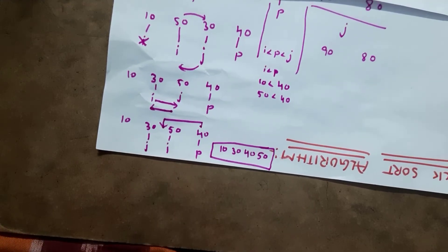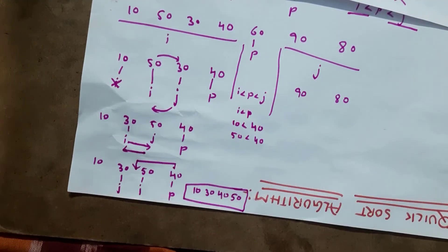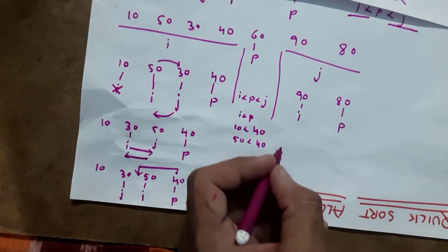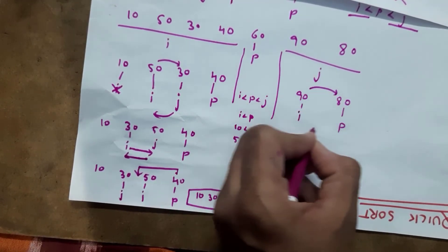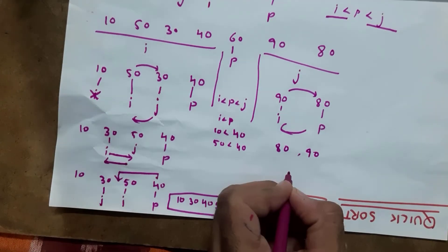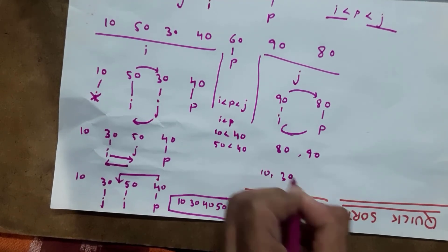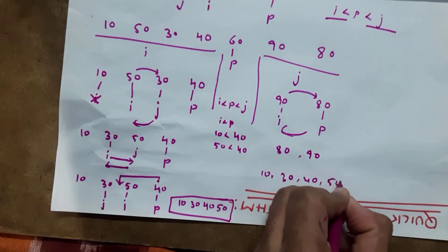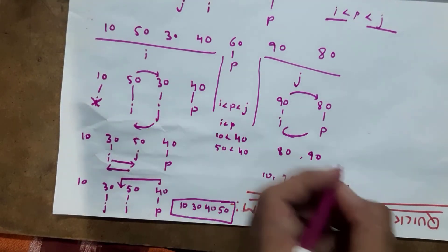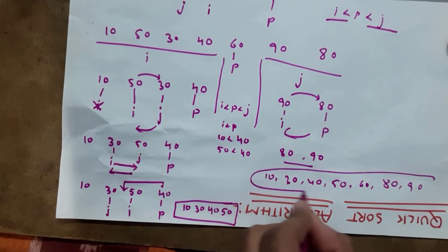Similarly, we perform sorting on the right subarray [90, 80] with pivot as 80. Since there is no j, we directly interchange 80 and 90. After performing this swap, we get all elements in sorted format: 10, 30, 40, 50, 60, 80, 90.